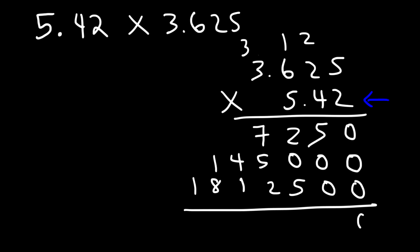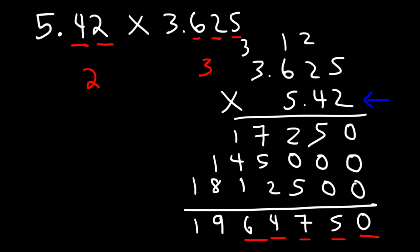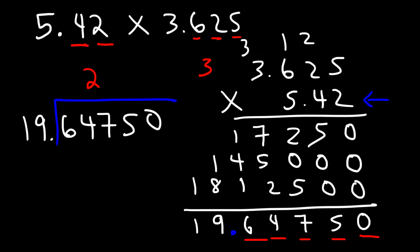Now let's add. So it's 0, 5. 2 and 5 gives us 7. Then 7 plus 5 is 12. 12 plus 2 is 14. 1 plus 4 plus 1 is 6. 1 plus 8 is 9. And then bring down the 1. The first number has 2 digits to the right of the decimal point, and the second number has 3, so we need 5 digits total to the right of the decimal point. Therefore, our answer is 19.64750, and you can see the 5 digits to the right.